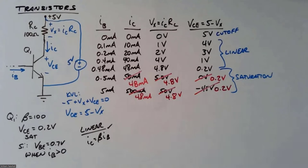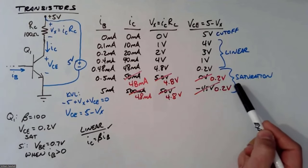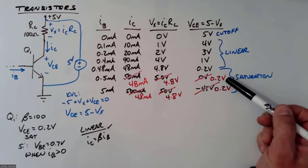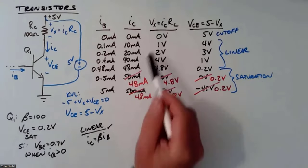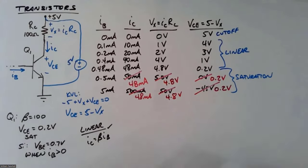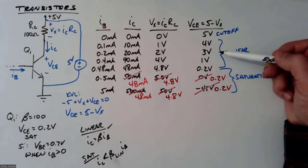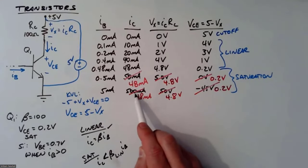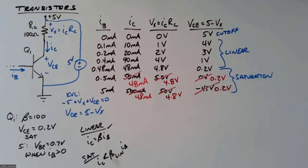A student asks: can we always assume linearity? Starting out, you can assume linearity, but then you have to check. If you assume linearity and find that VCE has fallen or tries to fall below 0.2 V, the transistor is saturated and the linearity assumption is wrong. So: assume linearity, then determine if the transistor is saturated. If saturated, IC is less than beta × IB.